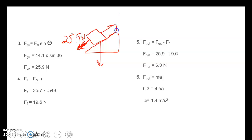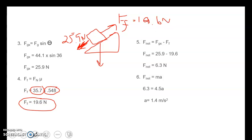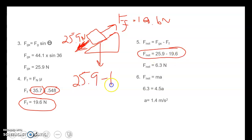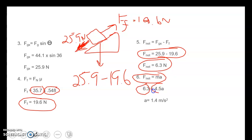To find the force of friction that pushes backwards, we take normal force times mu: 35.7 newtons times 0.548 gives a force of friction of 19.6 newtons. To find net force, we take force of gravity in x — 25.9 — and subtract friction of 19.6, giving 6.3 newtons. Substituting into Newton's second law, F equals ma: 6.3 equals 4.5 times a. Divide both sides by 4.5 and we get an acceleration of 1.4 meters per second squared going down the slope.